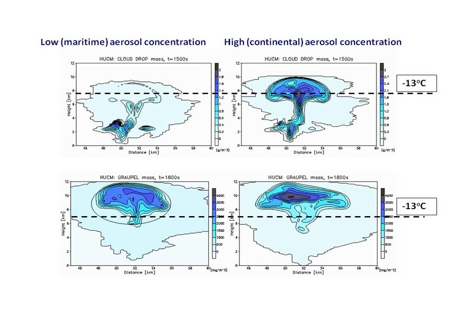I would like to show first the effects of aerosols on development of individual clouds in a maritime environment typical of a tropical cyclone development period. Here you can see cloud water content and graupel content in the case of low, typical maritime aerosol concentration, and this is for continental aerosol concentration. These clouds are simulated under absolutely the same thermodynamic conditions, and you see a significant difference.